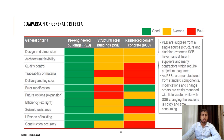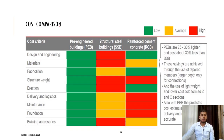If we look at the comparison of general criteria like design and dimensions, quality control, and efficiency, we can see the chart in this slide. Green blocks represent good, yellow shows average, and red shows poor. I have included comparison between pre-engineered buildings, structural steel buildings, and reinforced cement concrete buildings. In the cost comparison slide, in terms of material, structure, and weight, green represents low, yellow represents average, and red represents high. PEB buildings have light structural weight, shown in green, while RCC and SSB have higher weight, shown in red.